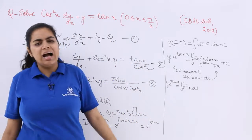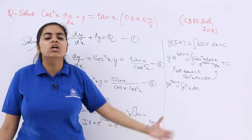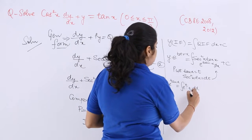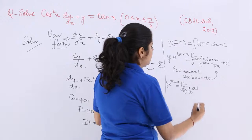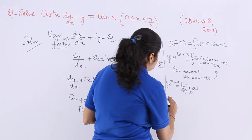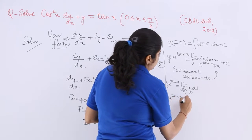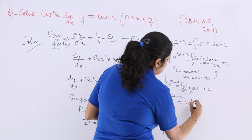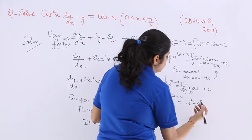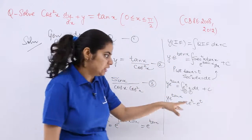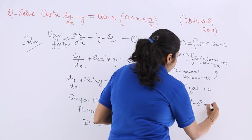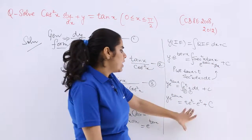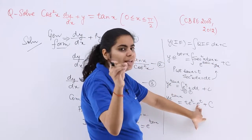Now apply the ILATE rule for integration by parts, where the first function is t and the second function is e^t. Applying the formula: first function × integration of second minus integration of (differentiation of first × integration of second), gives t · e^t − e^t + C, where C is a new constant of integration.